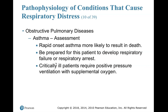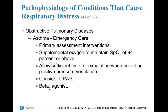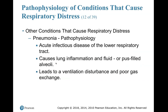Emergency care for asthma — primary assessment interventions. We always treat life-threatening emergencies in our primary assessment. Supplemental oxygen to maintain SpO2 of 94% or above. Allow sufficient time for exhalation when providing positive pressure ventilation. Consider CPAP and a beta-2 agonist, which would be albuterol or levalbuterol — especially if they have a metered-dose inhaler.